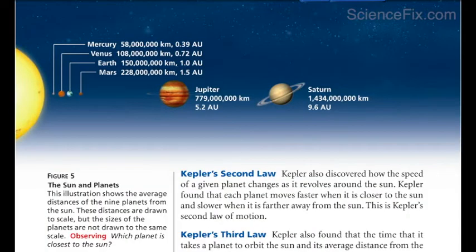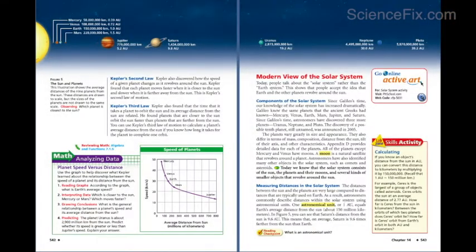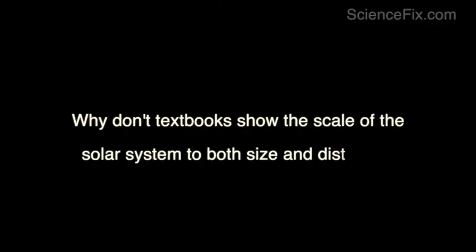The textbook is attempting to give students a sense of the sizes of the planets and the distances between them. Unfortunately, this is not accurately showing what those sizes and distances are actually like. That leads us to the question of why don't textbooks show the scale of the solar system to both size and distance. The answer is simple: it's too big. It can't fit on the pages.